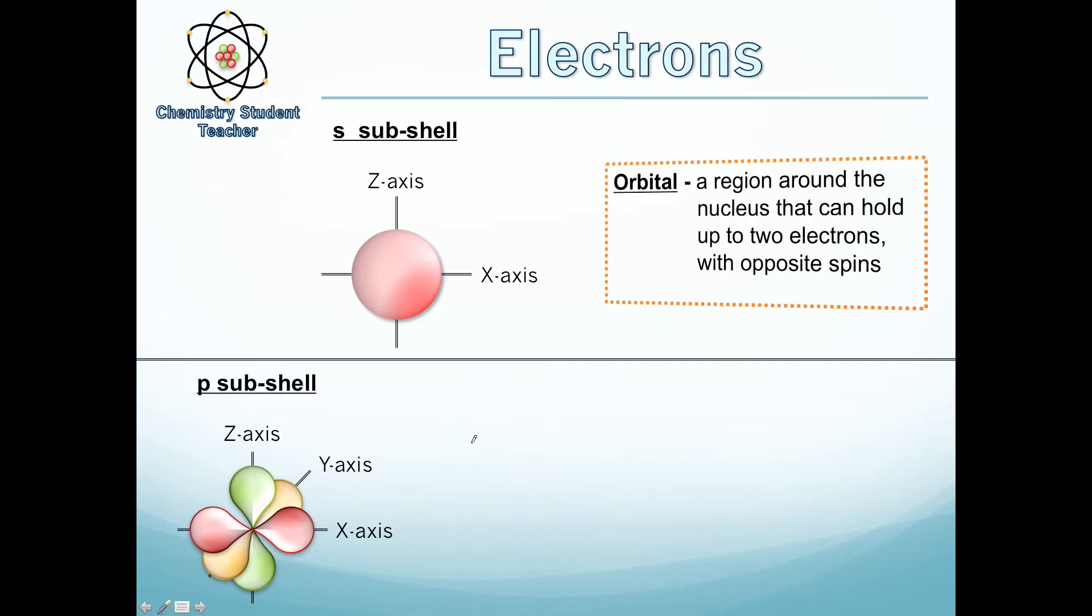On one axis you have a dumbbell which looks a bit like this, and then on the other two axes you have the exact same shape. However, each orbital, which the S subshell has one orbital, each orbital can only hold two electrons. So therefore the S subshell has a total of two electrons. However, the P subshell contains three orbitals and each one can hold two electrons, meaning there's a total of six electrons in the P subshell.